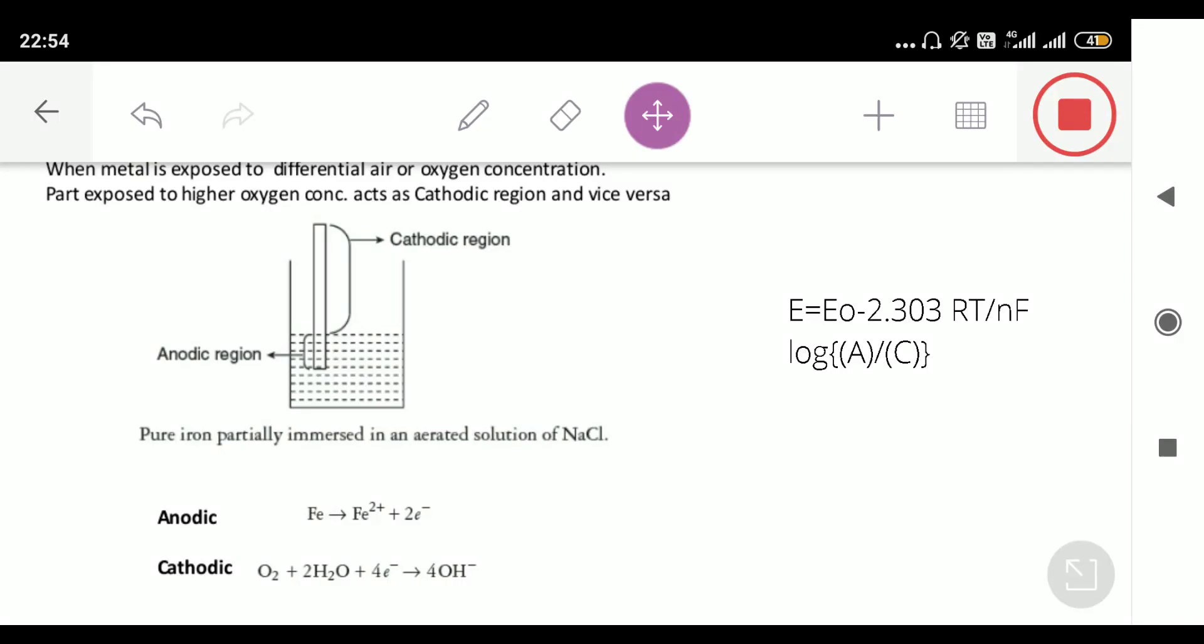Before starting differential aeration corrosion, we need to know the Nernst equation. From the Nernst equation, we have E equals E0 minus 2.303 RT upon nF log A upon C, where A means anodic part and C is the cathodic part.